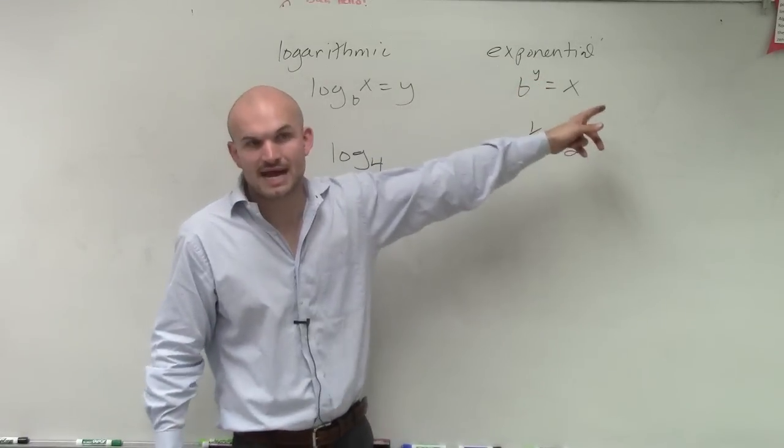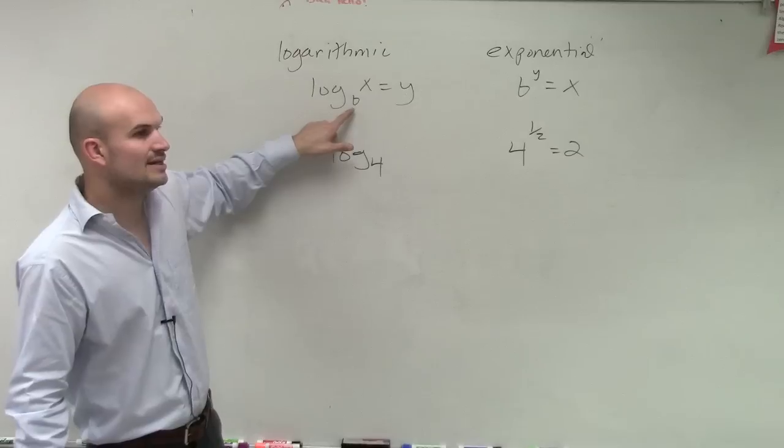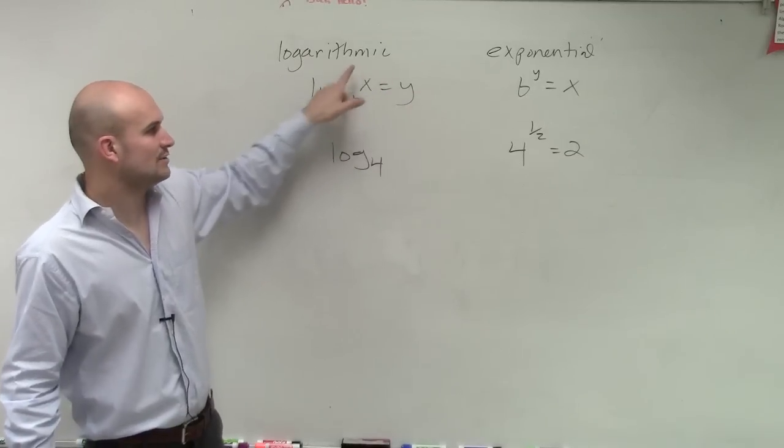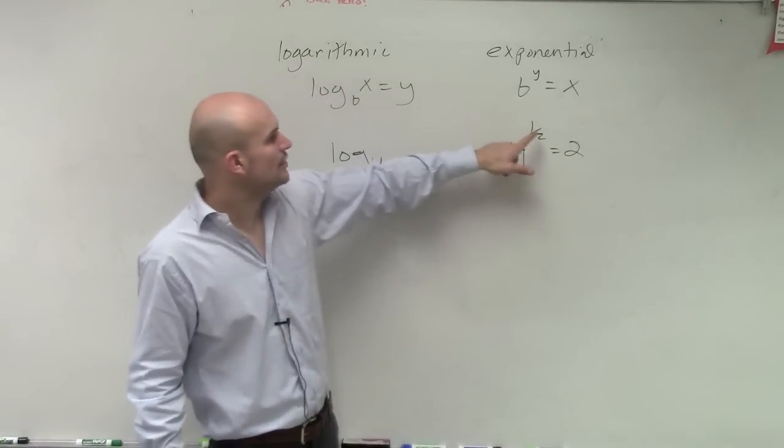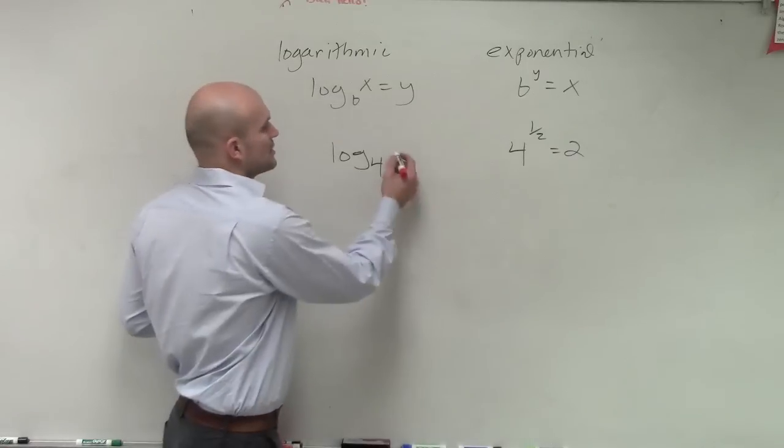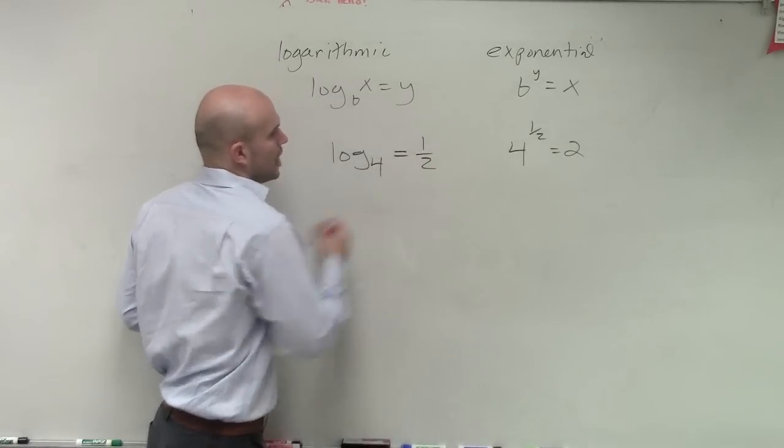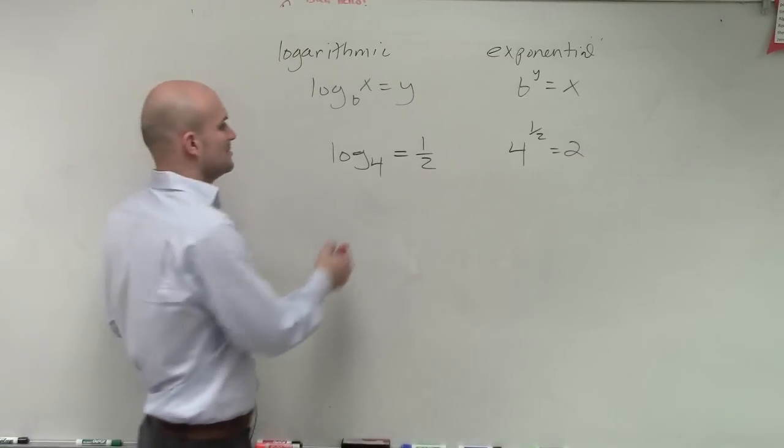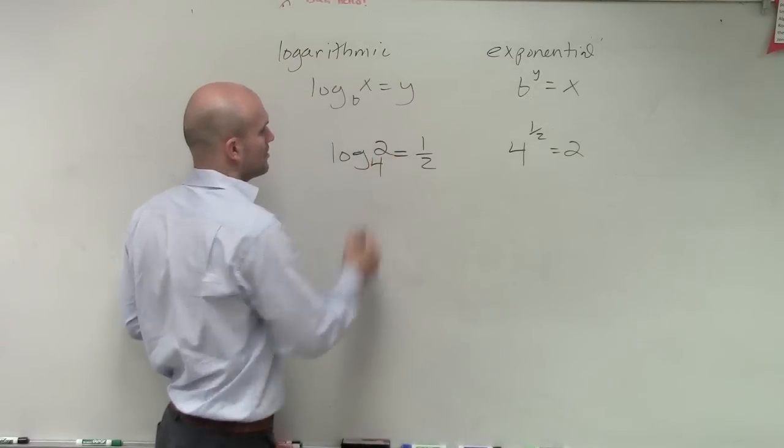This says b to the y equals x. This says b raised to the y equals x. So therefore, your exponent is what you're going to set your log equal to. And then it's going to be log base 4 of 2.